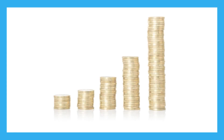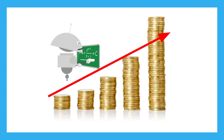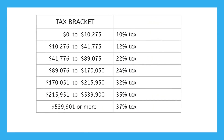You learned previously that progressive tax systems increase the tax burden on those with higher incomes. But there isn't some magic formula to calculate how much you owe based on your income. Instead, we split income into ranges called brackets. These are the tax brackets used for taxes in America in 2022, and your tax burden is determined based on which bracket you fall into.